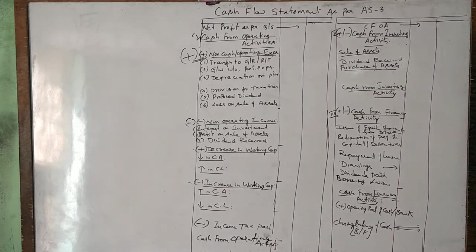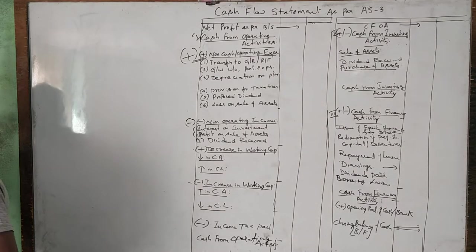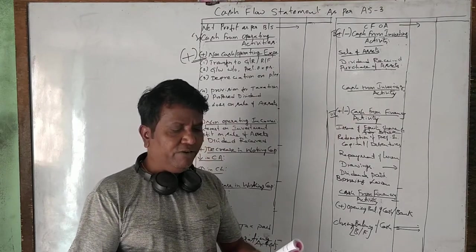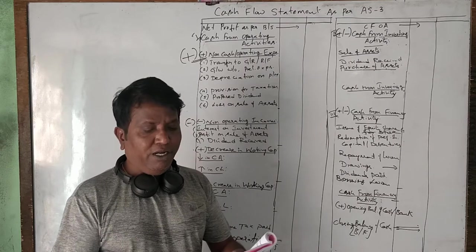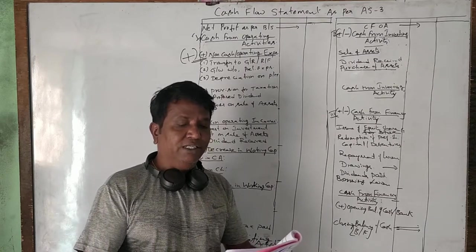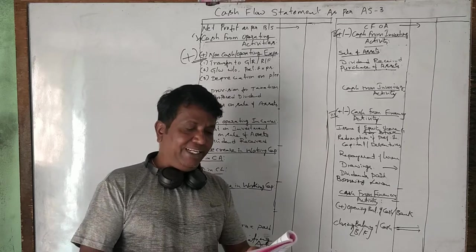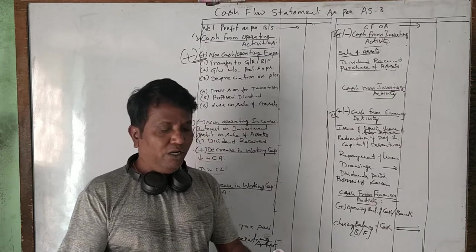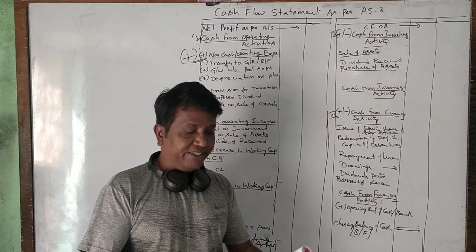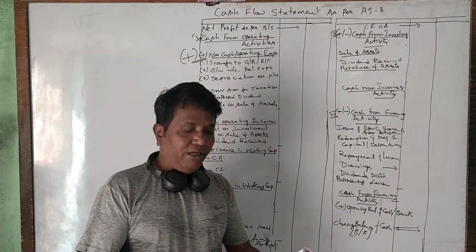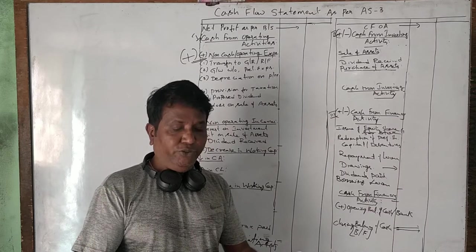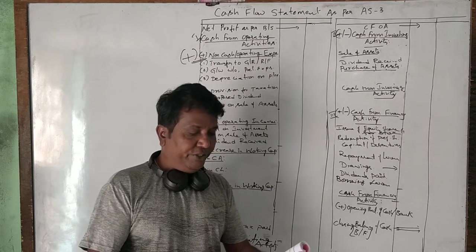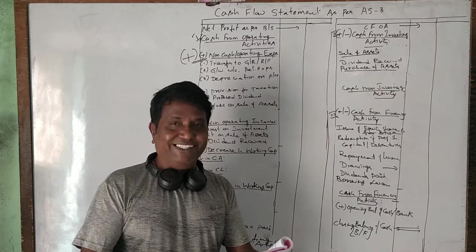Okay guys, this is a 2018 question as I told you. Let's read the question quickly. Following are the summarized balance sheets of the company as on 31st March 2011 and 31st March 2012. The liability side includes share capital, general reserve, profit and loss account, long-term loan, sundry creditors, and provision for tax. Assets include land and building, machinery, debtors, stock, cash, and goodwill. The first adjustment: dividend of rupees 4,600 was paid.